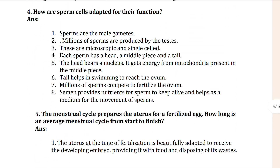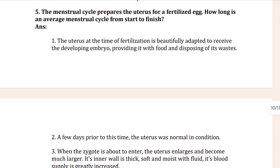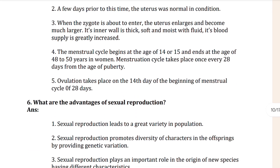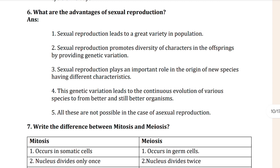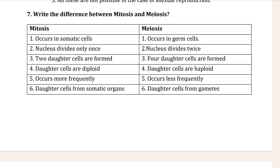The fourth question: how does a sperm cell adapt to its functions? Then the fifth one is also shown here. What are the advantages of sexual reproduction? - here it is given. And then the seventh one: the difference between mitosis and meiosis.